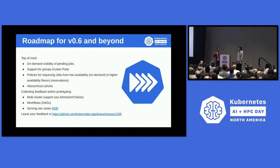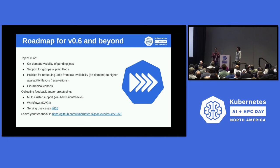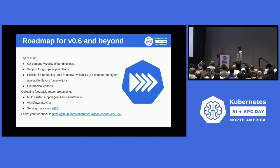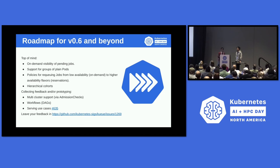To a lesser degree, we are also discussing multi-cluster support, which we plan to implement through admission checks. For workflows — think Argo and tools like that — as Kueue we don't want to implement workflows ourselves, but we want workflow orchestrators like Argo, Tekton, and Snakemake to work with Kueue. We're working on integration for those tools. Serving is also something in our minds with KServe. If you have any thoughts about these topics, feel free to reach out through GitHub issues or find us in the Working Group Batch channel in the Kubernetes Slack.